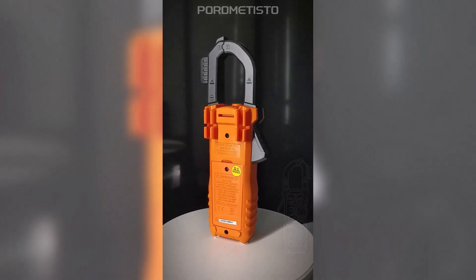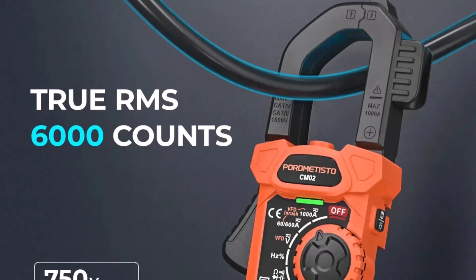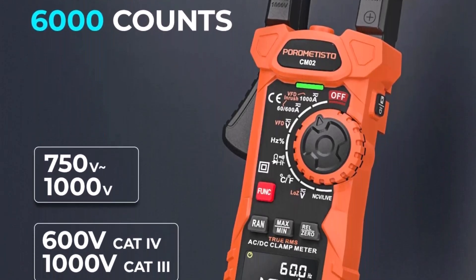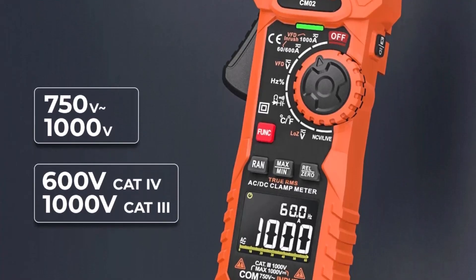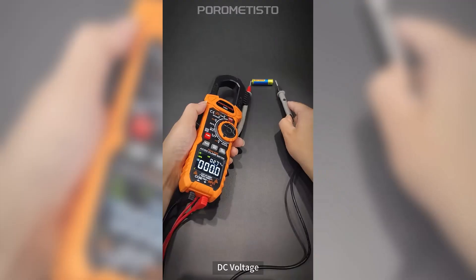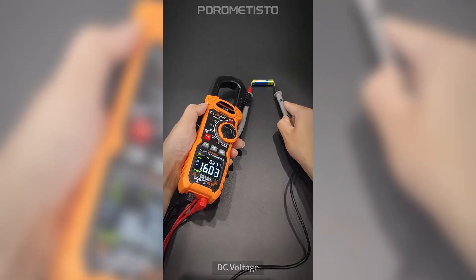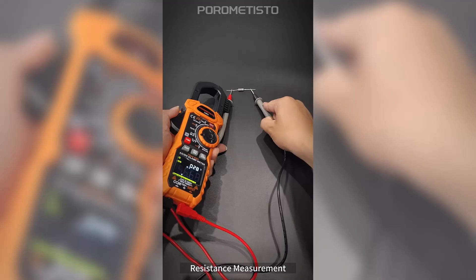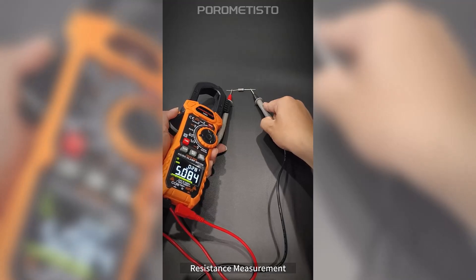This dual-impedance true RMS multimeter integrates a comprehensive array of measurements including AC-DC voltage and current, frequency, duty ratio, resistance, capacitance, temperature, diode, continuity, NCV, VFD, and inrush current testing.